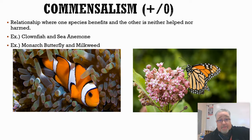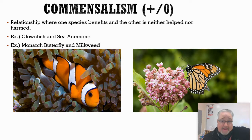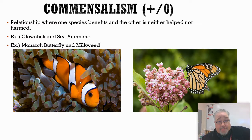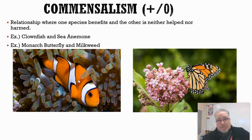A really good example of commensalism is the clownfish and the sea anemone. Sea anemones have stinging cells — they're kind of like little jellyfish. They'll sting their prey to feed. But clownfish have an adaptation: a slimy coating that allows them to swim through the tentacles without being stung. This allows the clownfish to hide from predators, because any predator coming near will get stung by the sea anemone. This relationship helps the clownfish but doesn't really do much for the sea anemone — a plus-zero relationship.